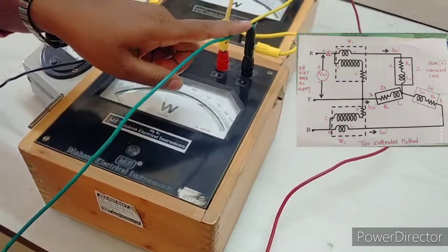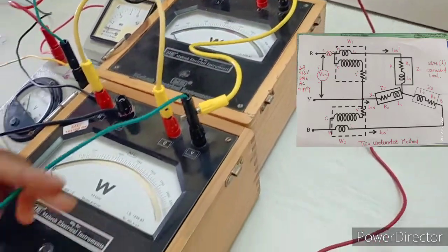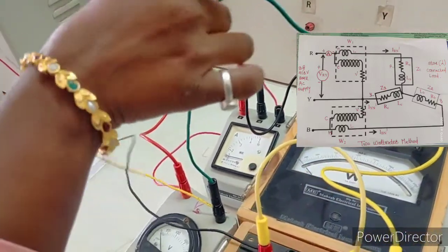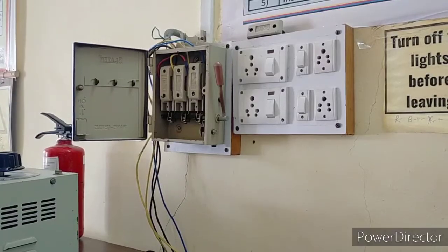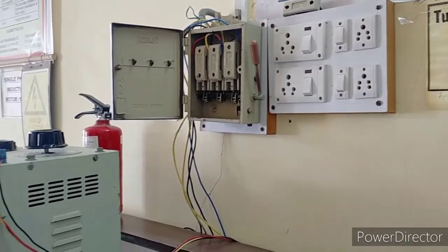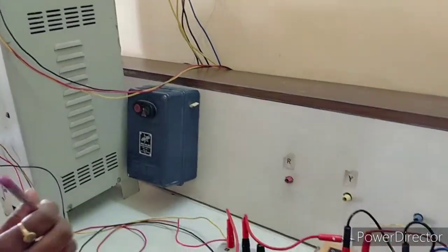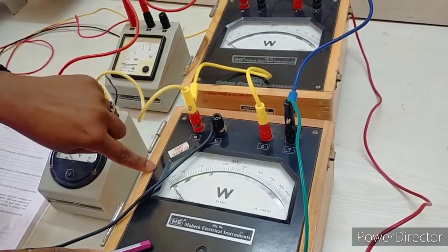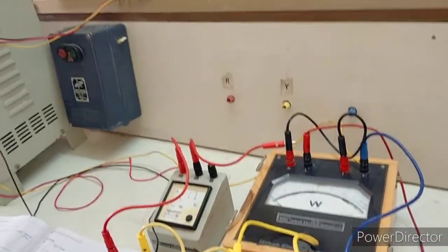I am connecting the Y phase to the V terminals — wattmeter 1's V and wattmeter 2's V are connected to each other, and the Y phase is connected to those V terminals. From this V we are connecting the negative of the voltmeter, and the Y phase connection is completed. As per these connections we have to take the readings. We are giving three-phase AC supply with the help of this three-phase auto transformer.